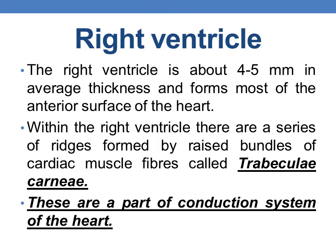Coming to the right ventricle, the right ventricle is about 4 to 5 millimeters in average thickness and it forms most of the anterior surface of the heart. Within the right ventricle, there are a series of ridges formed by raised bundles of cardiac muscle fibers called trabeculae carneae, and these form an important part of the conduction system of the heart.